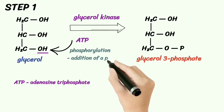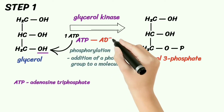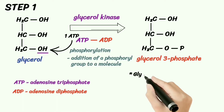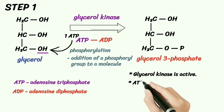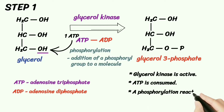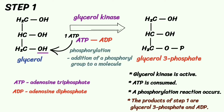Phosphorylation is the addition of a phosphoryl group to a molecule. Since one ATP molecule is used during phosphorylation, the ATP becomes ADP, or adenosine diphosphate. To recap, these are the key points in step 1: glycerol kinase is active, adenosine triphosphate is consumed, a phosphorylation reaction occurs, and the products are glycerol-3-phosphate and adenosine diphosphate.